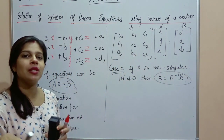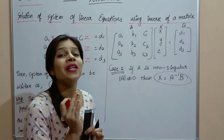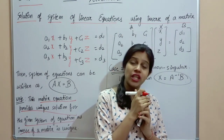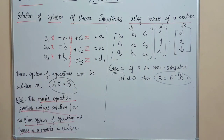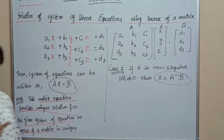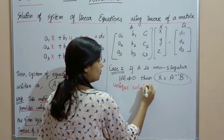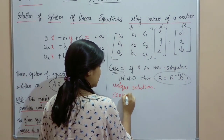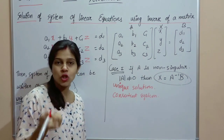So solution of system of linear equations kaise aayegi? A inverse ko B se multiply karo to x ki values aa jaayengi. Kyunki yahaan pe hum inverse of a matrix ki baat kar rahe hain. Aapko pata hai ki inverse of a matrix jo hai woh unique hota hai. Therefore joh solution aayega is case mein when A is non-singular, woh unique aayega. Matrix equation humein unique solution degi given system of linear equations ke liye.